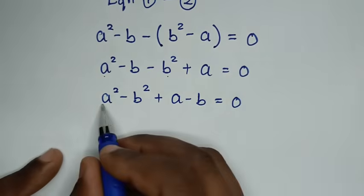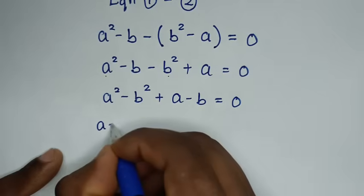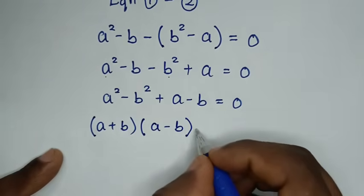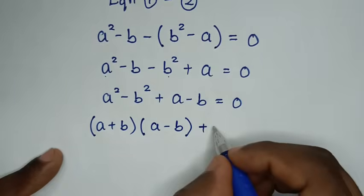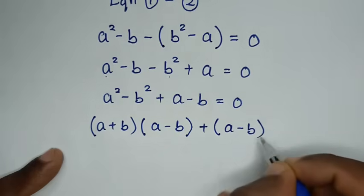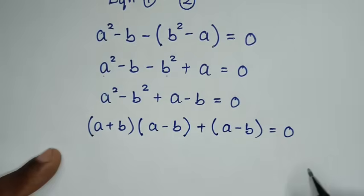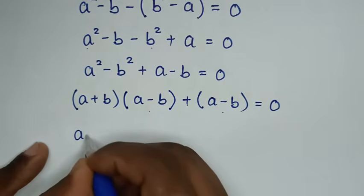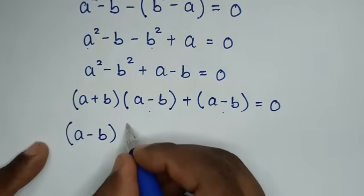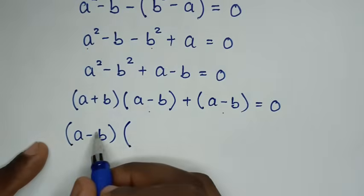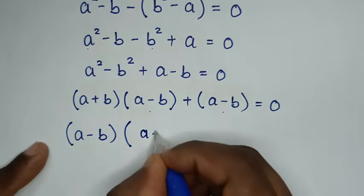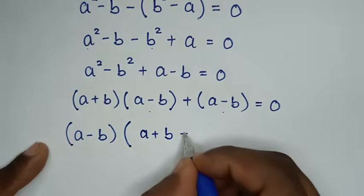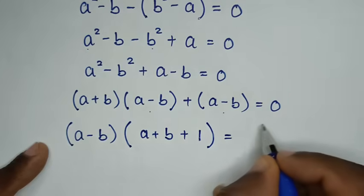Now, a squared minus b squared factors as (a plus b)(a minus b). So we have (a plus b)(a minus b) plus (a minus b) equals 0. We can then factor out (a minus b) to get (a minus b) times the quantity (a plus b plus 1) equals 0.